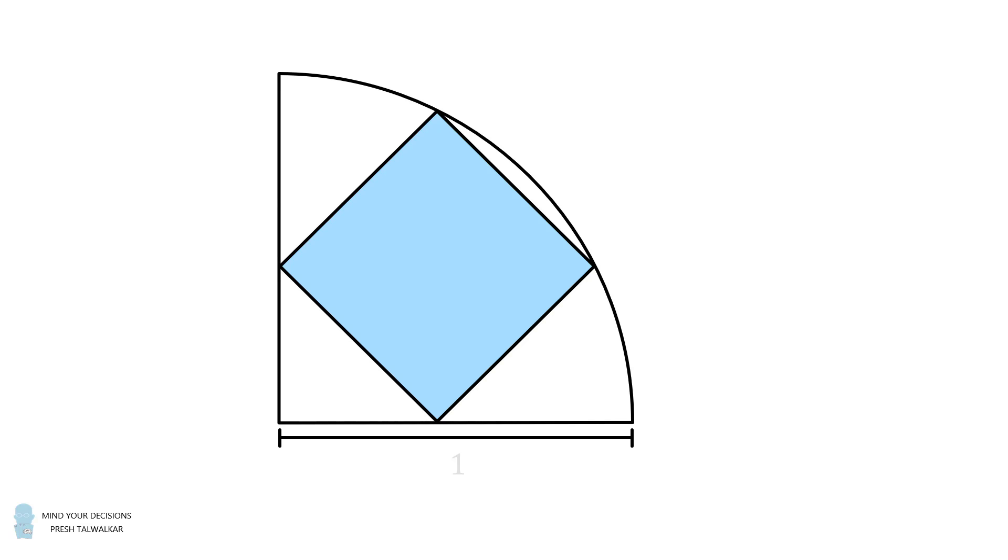If the quarter circle has a radius equal to 1, what is the area of the square equal to?